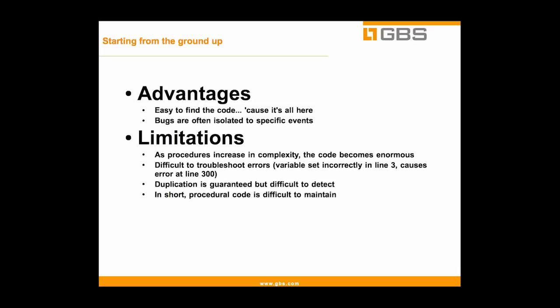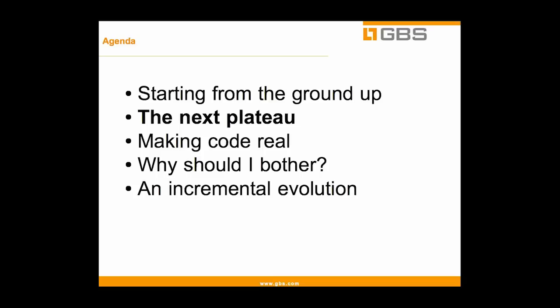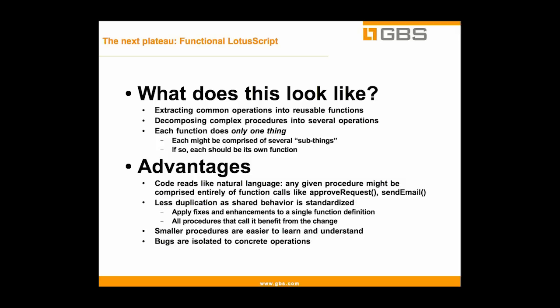So where do we go from there? The next plateau from procedural LotusScript is functional LotusScript. This consists of identifying your common operations and extracting them into reusable functions. If you have two buttons that do almost the same thing with just a couple of subtle differences, you can take what is common and define a function that you call from both buttons, passing in how it should behave differently based on which button initiated it.